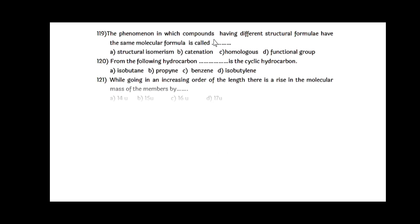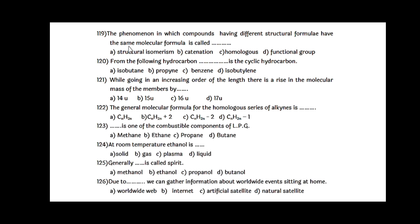The phenomena in which compounds have different structural formula but the same molecular formula is structural isomerism. Benzene is the cyclic hydrocarbon. While going in increasing order of length, there is a rise in the molecular mass by 14 units. The general molecular formula for the homologous series of alkyne is CNH2N-2. Propane is one of the combustible components of LPG. At room temperature, ethanol is in liquid state. Ethanol is called spirit.